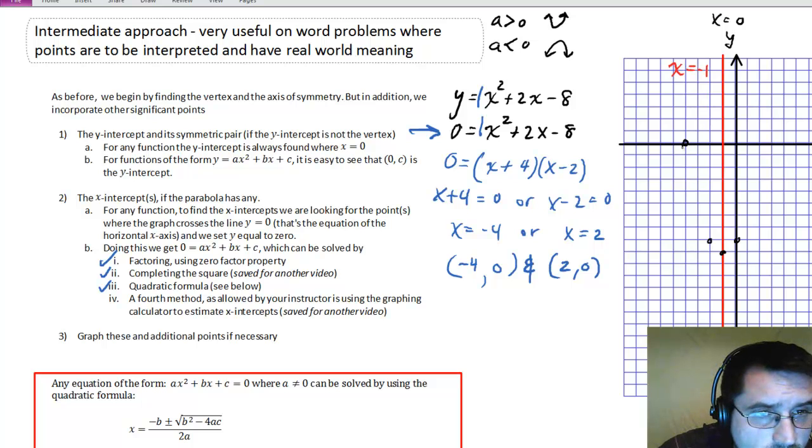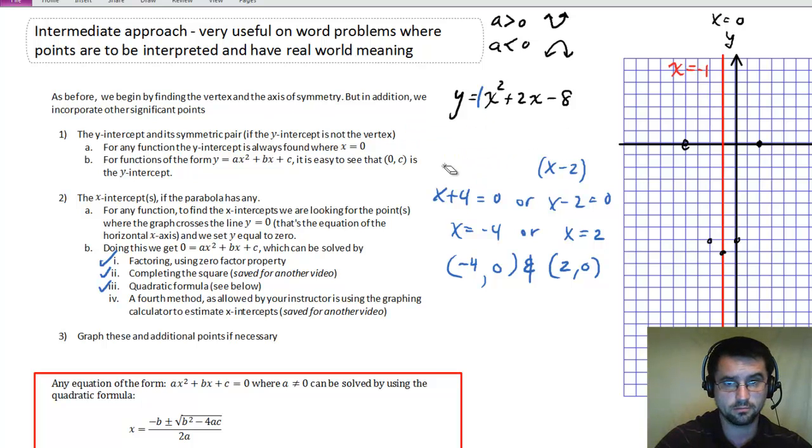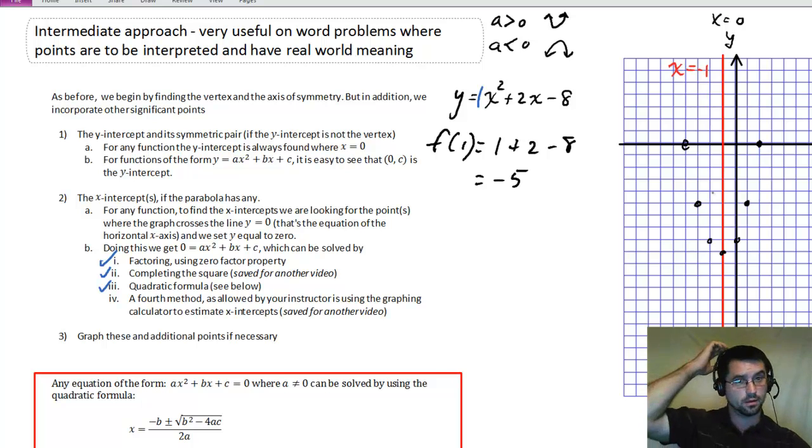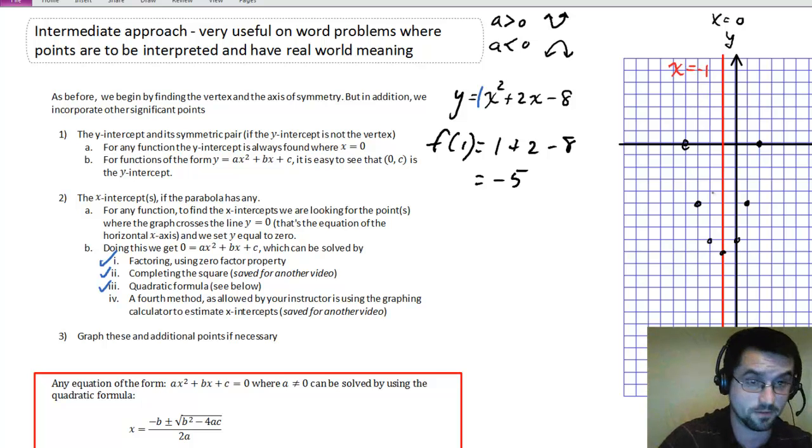So we have one that's right there, and we have one that's right there. And if that's not enough points, and we want to get one more between the y axis and this x intercept, we could plug in x equals one. So we could try to find f of one, and that would be one plus two minus eight, which would be negative five. And that would give us that point, and it's buy one get one free, so we get that one as well. And so that would be seven points. That's a pretty good graph.